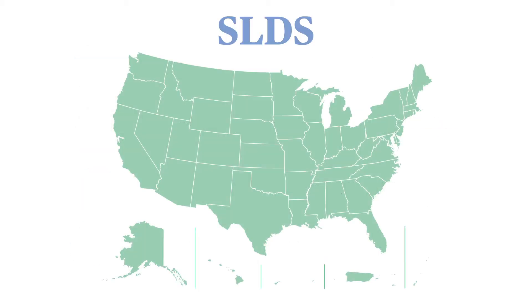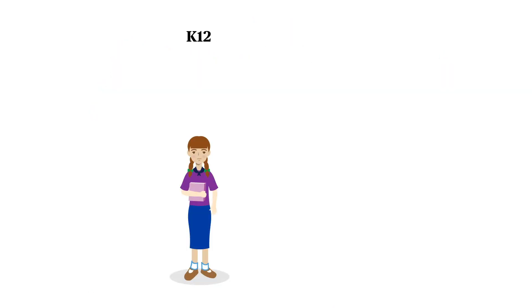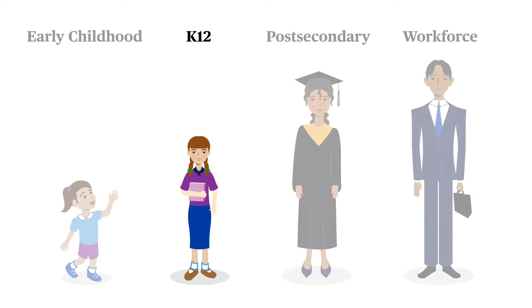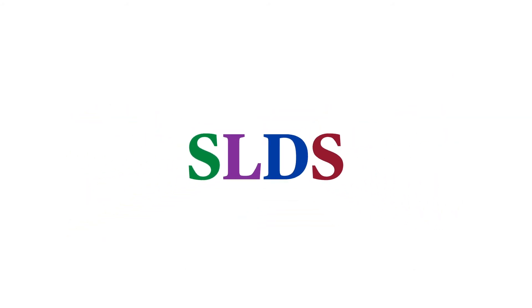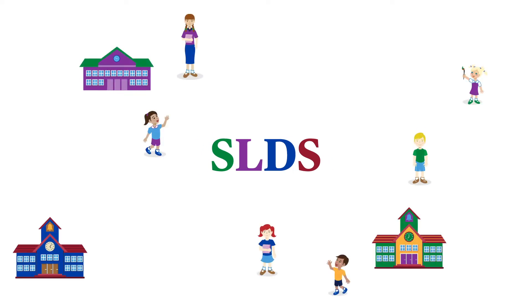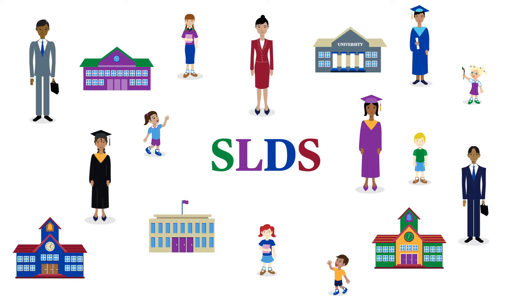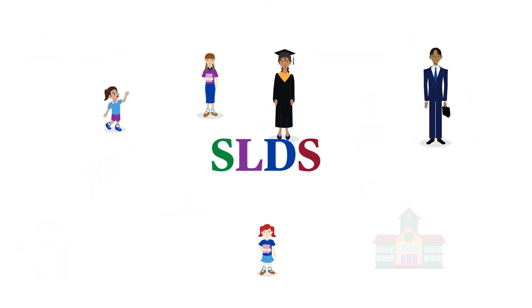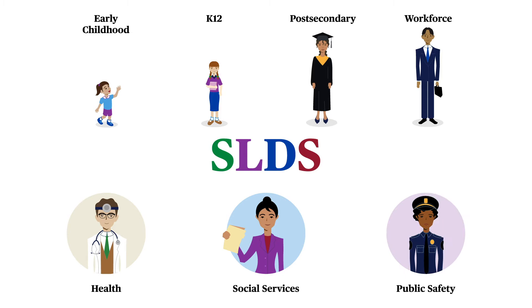The data included in SLDSs vary from state to state. An SLDS can cover a specific part of the education to career pathway, or several parts. Many SLDSs include data from early childhood education and early care programs, K-12 schools, community colleges, and four-year colleges and universities, and workforce programs and services. Some also incorporate data from health, social services, and public safety agencies.